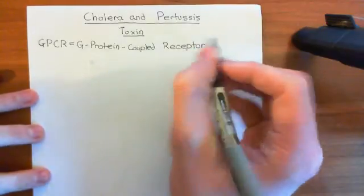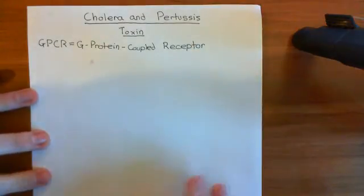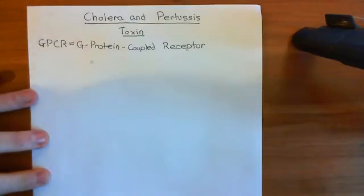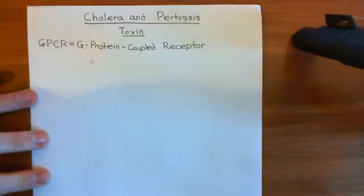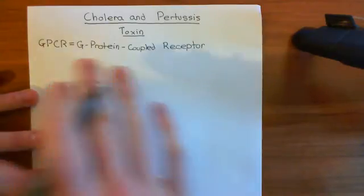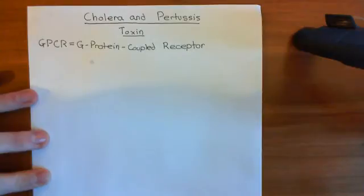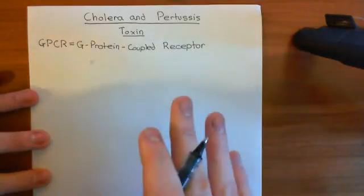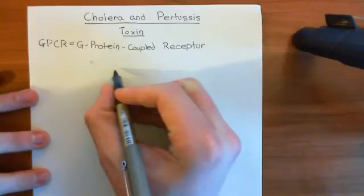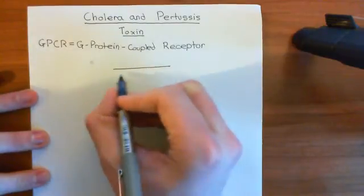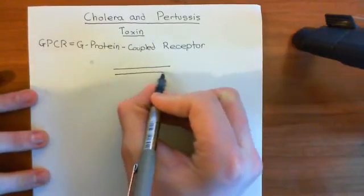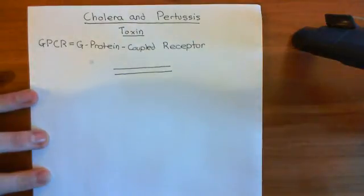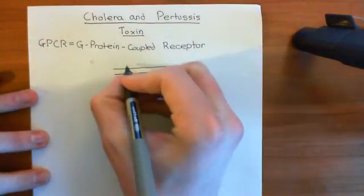G-protein coupled receptors are a massive family of proteins — there are 800 G-protein coupled receptors in humans alone. In addition, approximately 30 to 40% of the drugs currently in clinical use work by interacting with G-protein coupled receptors. So this is a massive area of pharmacology. Let's draw out the structure of a typical G-protein coupled receptor, because they all have a conserved seven-membrane-spanning alpha helical domain.